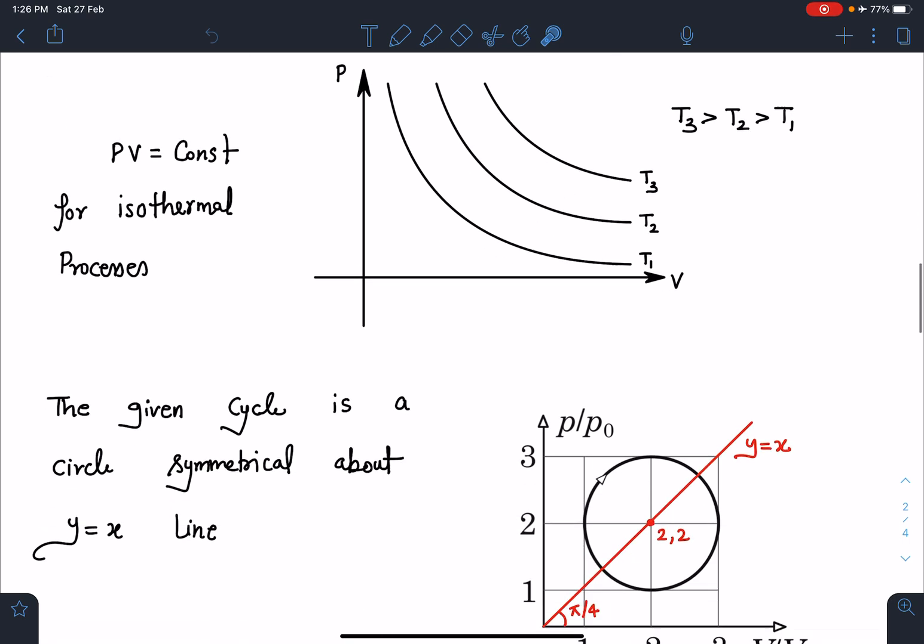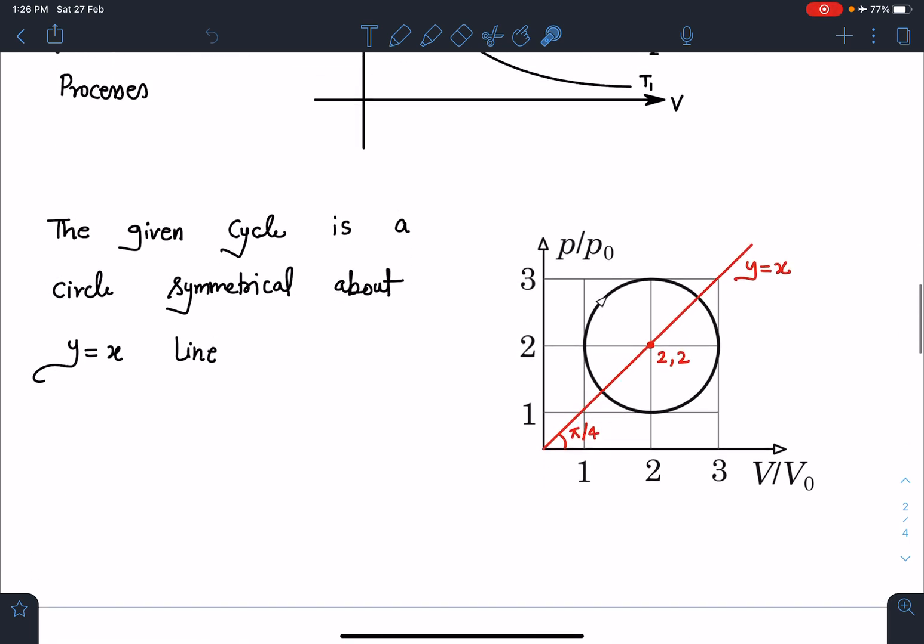About the circle, the given circle is symmetrical about the y=x line. We know the center and the radius. The radius of this circle is one unit and its center is at (2,2).